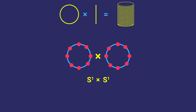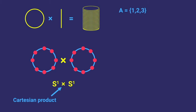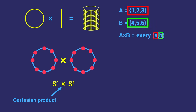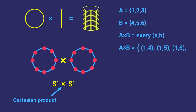To answer this, we have to realize that this product symbol really represents the Cartesian product of two sets. If we have some set A made up of the numbers 1, 2, and 3, and then another set B made up of 4, 5, 6, then the Cartesian product of A and B is the set of all ordered pairs (a, b), where a is in A and b is in B. So the Cartesian product would include (1,4), (1,5), (1,6), (2,4), (2,5), and so on.